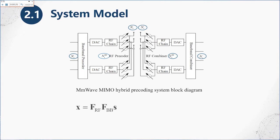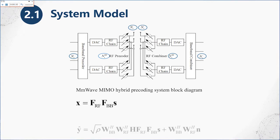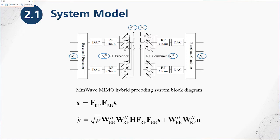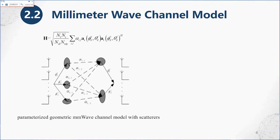The transmitted signal at the base station and the received signal at the user equipment are given by the equations shown. Considering that millimeter wave has the characteristics of high path loss and line-of-sight transmission, the narrow band scattering cluster channel model is used to model the millimeter wave channel.